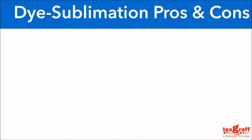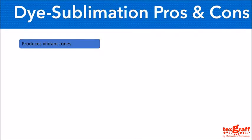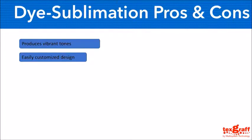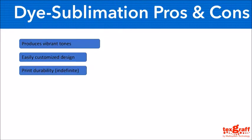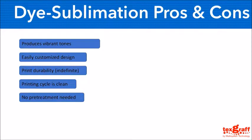The pros and cons for dye sublimation — first is the vibrant tones, meaning the end result of printouts is vibrant and some colors you cannot actually get using DTG. Followed by that is the easily customized design, similar to DTG. The print durability is indefinite when sublimated onto the textile, so the washability is lifetime — it will not fade because it dyes the fabric. The printing process is simple and straightforward, making it a clean process. One of the good advantages of dye sublimation is that pre-treatment is not needed, as the textile used is ideally polyester.